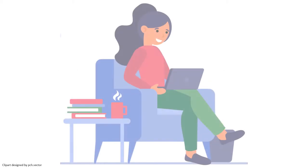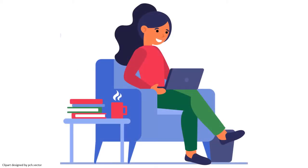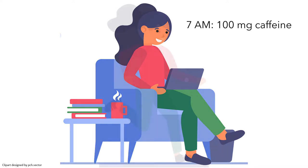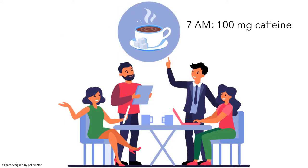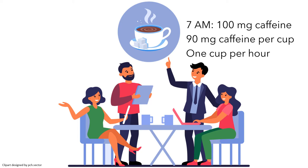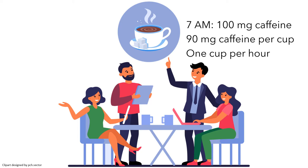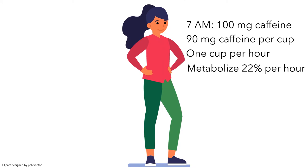The first scenario involves drinking coffee. After Aleema gets up in the morning, she drinks a cup of coffee around 7am, ingesting 100mg of caffeine. Then she heads into work, where everyone drinks coffee continuously throughout the day. Each cup of coffee contains 90mg of caffeine, and Aleema drinks one cup of coffee per hour. Aleema's body metabolizes 22% of the caffeine each hour.